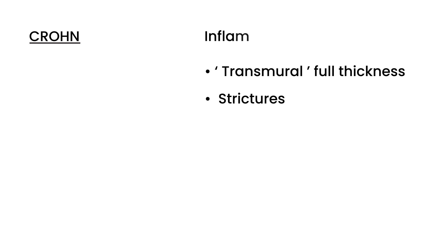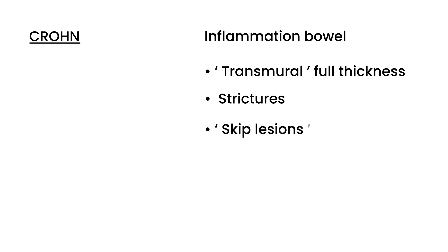Before getting into signs and symptoms, here are a few key things to know about Crohn's disease. First, the inflammation is transmural, meaning it involves the full thickness of the bowel wall — that's a key term on licensing exams. Second, there is stricture formation in addition to the inflammation. Third, there are skip lesions, meaning the inflammation is not continuous but occurs in sharply demarcated areas.